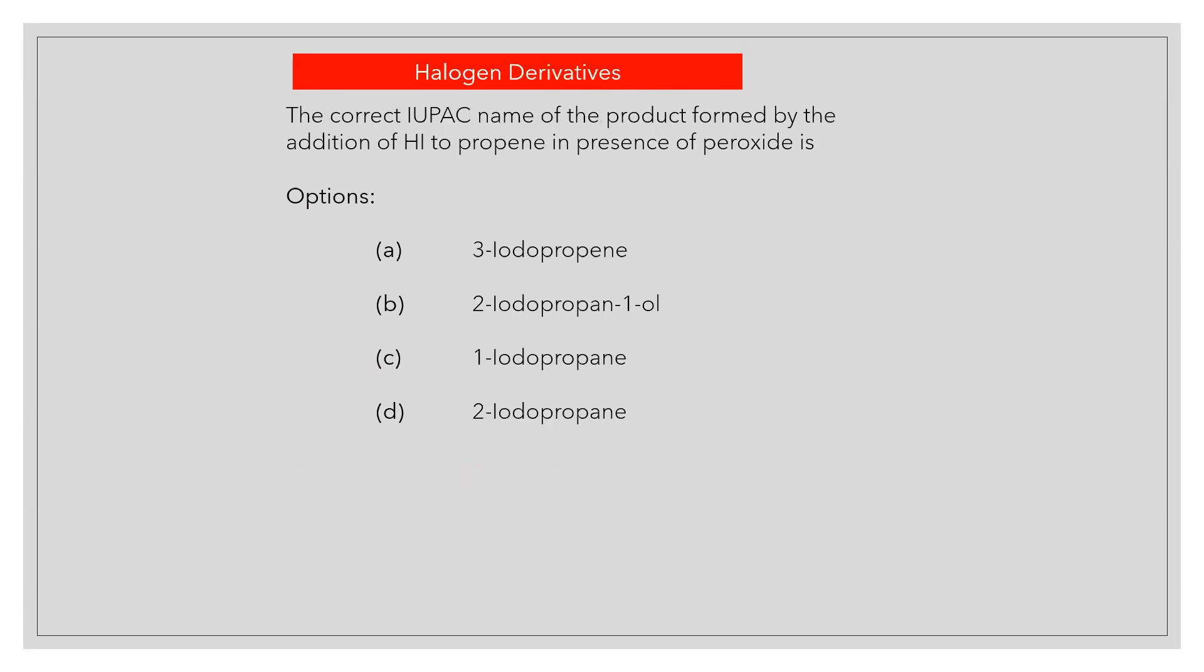The correct IUPAC name of the product formed by the addition of HI to propene in presence of peroxide is? Answer D: 2-iodopropane.